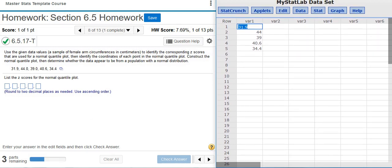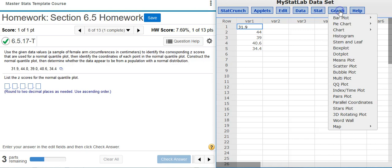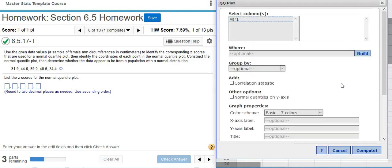To do that I'm going to come up here to the top and select Graph, QQ plot. In the options window I select the column where my data is located, and then I'm going to check this box down here next to normal quantiles on y-axis.